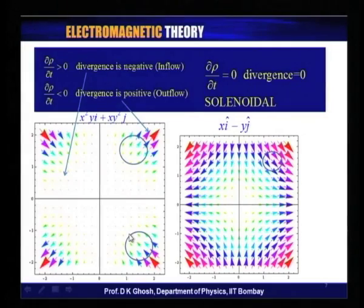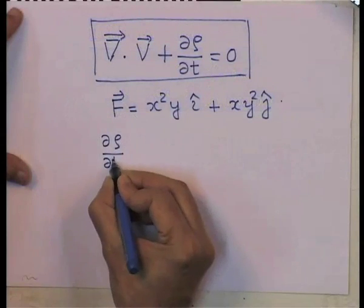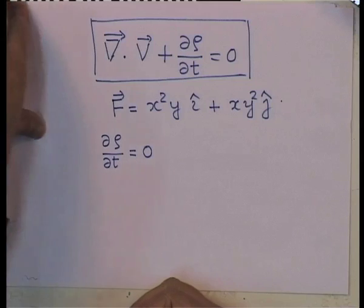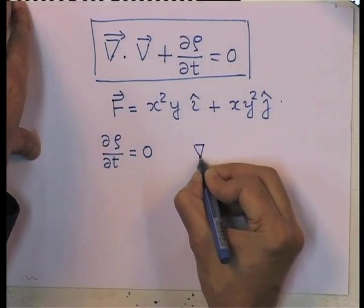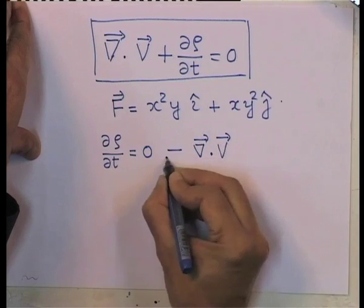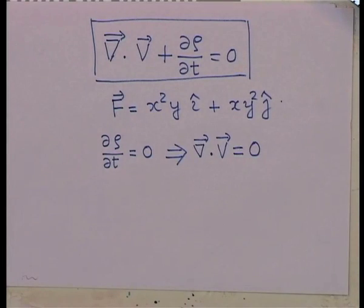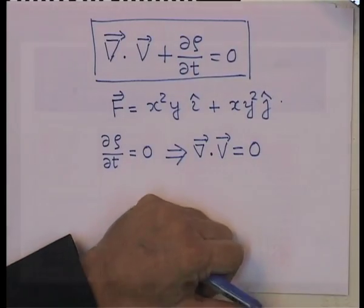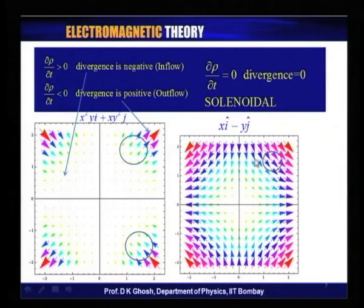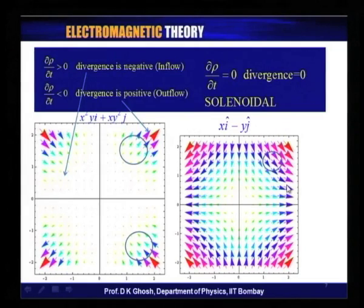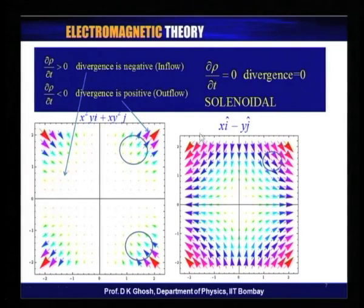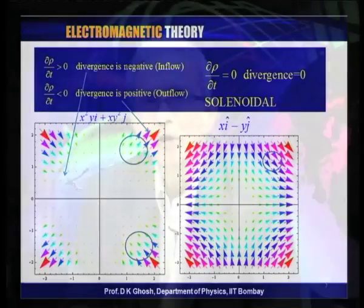Consider a field where d-rho/dt equals zero — an incompressible fluid. Then del dot v equals zero as well. For example, the field x î minus y ĵ has zero divergence: as much fluid enters any circular region as exits. A vector field for which the divergence is everywhere zero is called a solenoidal vector field.